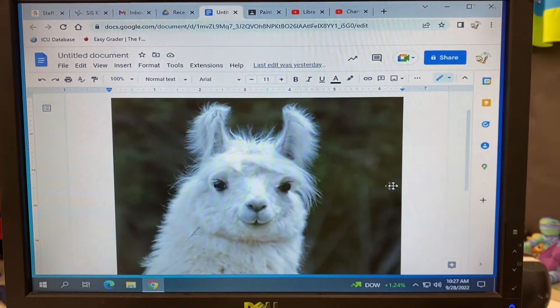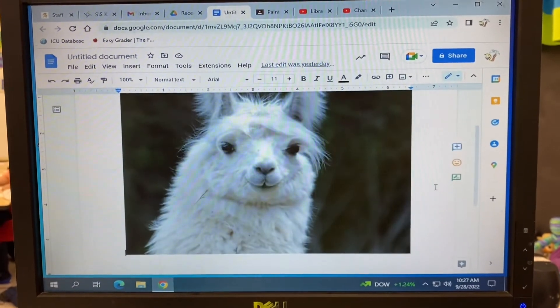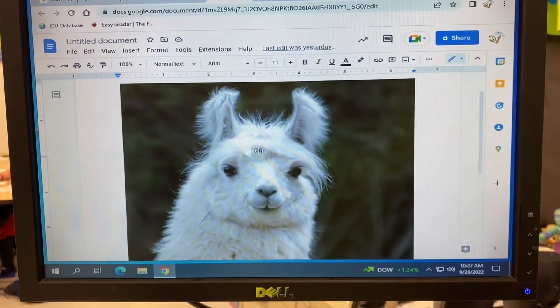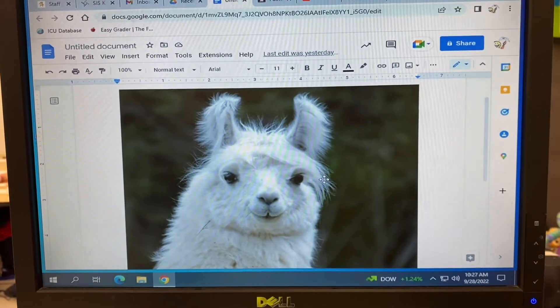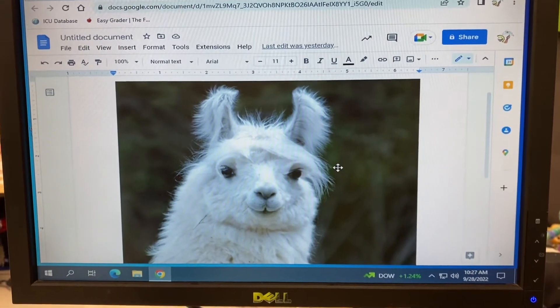The first part of this assignment is you're going to find an animal that has long hair and you are going to find a good photograph just of the face and you are going to place it on a Google Doc so that you can refer to it as your drawing.